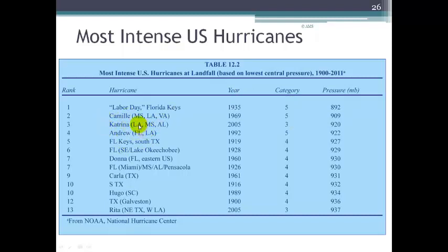Here's Hurricane Katrina, which affected Louisiana, Mississippi, and Alabama — it was a Category 3 hurricane with a pressure of 920 millibars. Hurricane Rita, also in 2005, affected northeast Texas and west Louisiana: Category 3, pressure ranked at 937. I remember Hurricane Andrew — I was in graduate school and we studied it extensively. It was a big one for Florida and Louisiana: a Category 5 storm with a pressure of 922 millibars. We'll see what this year's hurricane season brings.